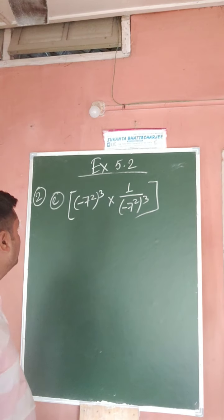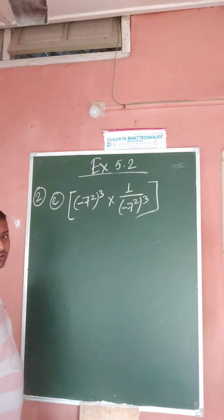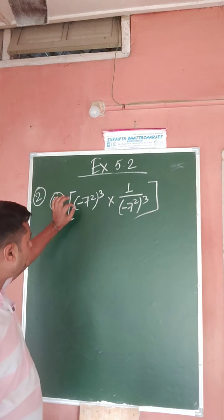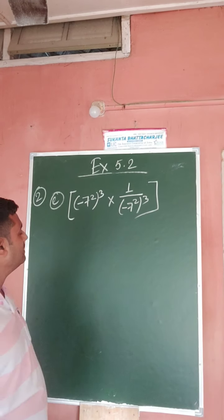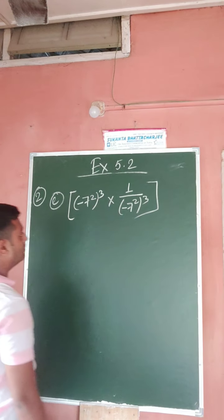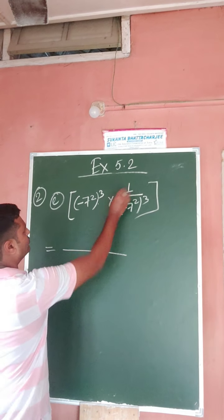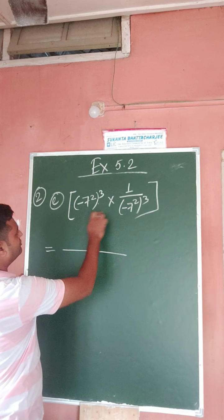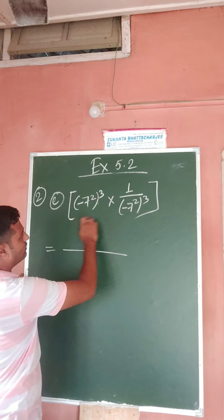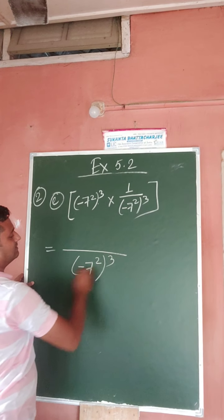Okay, so come to the next question, question number e: minus 7 square, whole cube, into 1 by minus 7 square, whole cube. So this you can directly write. In this case there is no numerator, so the denominator is 1, and that 1 is multiplied.